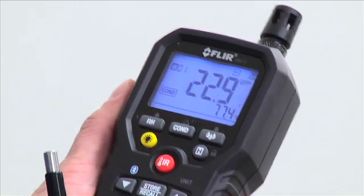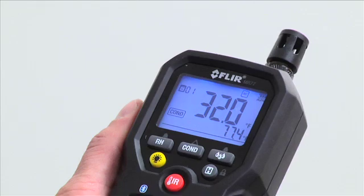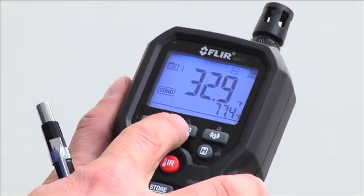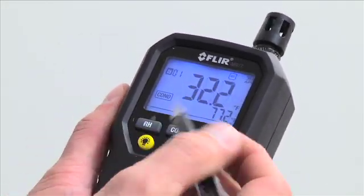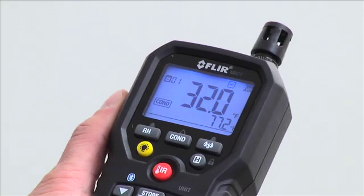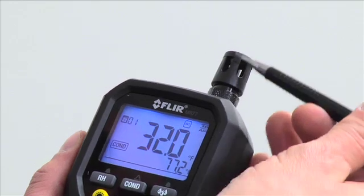The next function on the moisture meter is condensation mode, and this again takes temperature and humidity and does calculations. There's condensation in both millibars and in degrees Fahrenheit, and this is using the temperature and humidity in the sensor here.